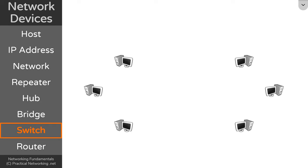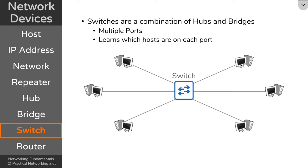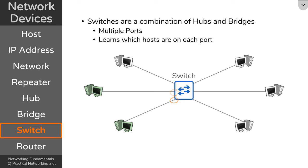This finally brings us to switches. Switches are sort of like a combination of hubs and bridges. They are like hubs in the sense that many devices can connect to the switch, and they are like bridges in the sense that they can learn which hosts are connected to each port. The main difference is that they're doing it on a per-port basis, which means if these two hosts want to speak to each other, the switch will know that only the two ports connected to those green hosts need to receive this traffic and will keep communication contained to just those ports.